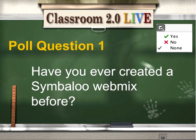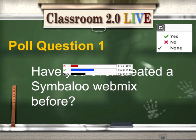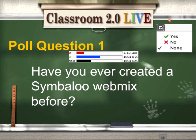We're going to move on to voting. In the participants window, the fourth icon on the right has a little voting option. If you click on it, you're going to give a yes or no to the question: have you ever created a Symbaloo web mix before? It's a green check if you have and a red X if you haven't. So far, about 50% of the room have created a web mix.